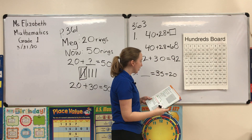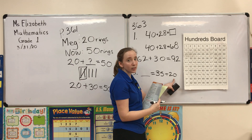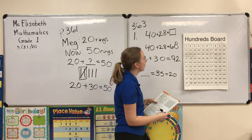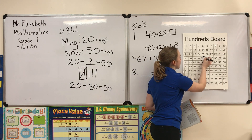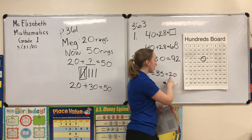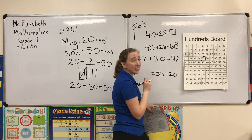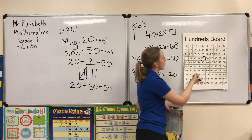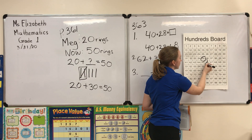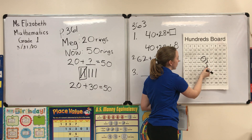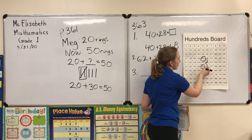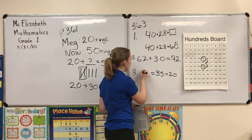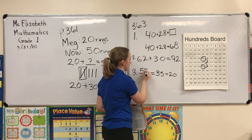For number three we have 35 plus 20. 20 has zero ones, so we start with 35. Circle 35, then think about 20 — 20 has two tens — so we go: 10, 20, or one, two rows. We circle 55. So 35 plus 20 is 55.